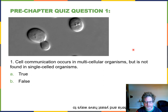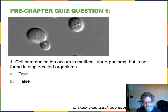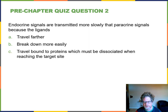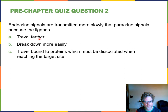Three pre-assessment questions to see where you are on cell communication. Question one: cell communication occurs in multi-cellular organisms and is not found in single-cell organisms. That is false — the origin of cell communication is in single-cell organisms. Yeast cells communicate near mating and bacteria communicate with one another. Question two: endocrine signals are transmitted more slowly than paracrine signals because the ligands travel farther. The endocrine system puts the signal into the blood where it can travel everywhere, while paracrine signals occur between cells that are close to one another.